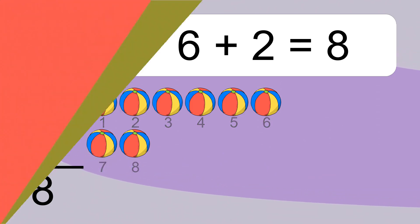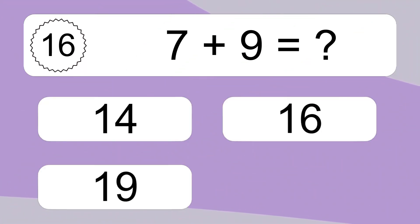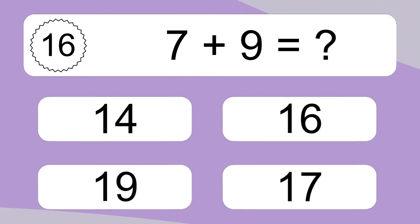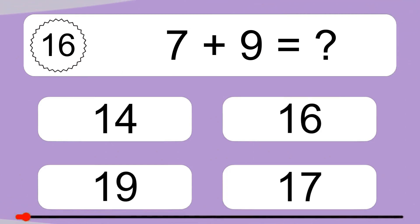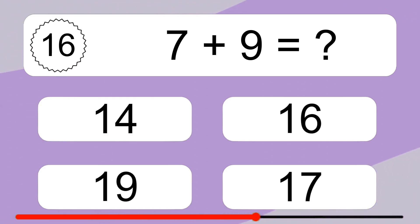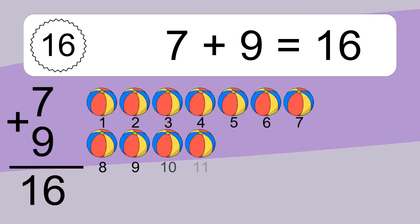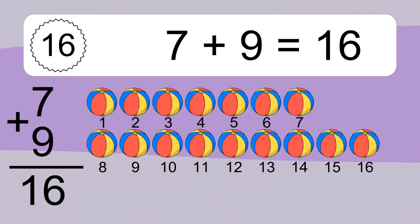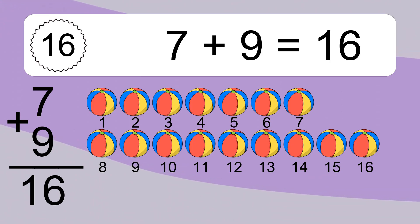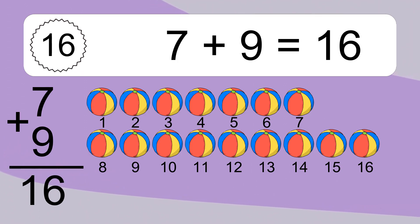7 plus 9 equals 16. Let's count it. 1, 2, 3, 4, 5, 6, 7, 8, 9, 10, 11, 12, 13, 14, 15, 16.